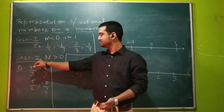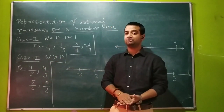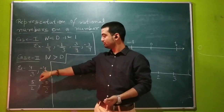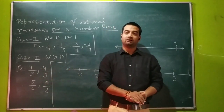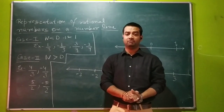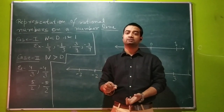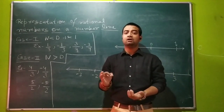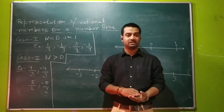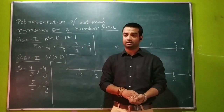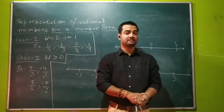Our second case is when the numerator is greater than the denominator. You would be wondering how minus 4 by 3 comes into this category. Well, while comparing numerator and denominator, we will just look at their absolute value. We will not look at whether the numerator or denominator is negative. If it is 4 upon minus 7, it will still be under numerator less than denominator, because 4 is less than 7.